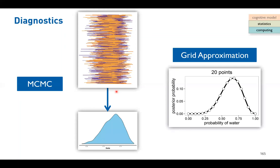This shape is unsurprisingly the posterior shape we saw on the previous slides. And this one, if you still recall, is the grid approximation result of the same binomial model from two or three lectures ago. These two are essentially the same thing.